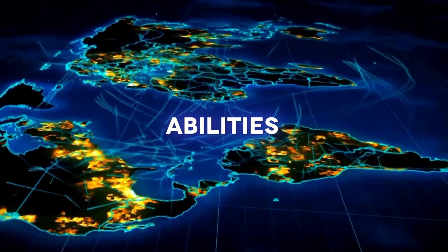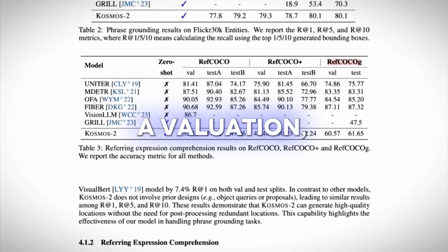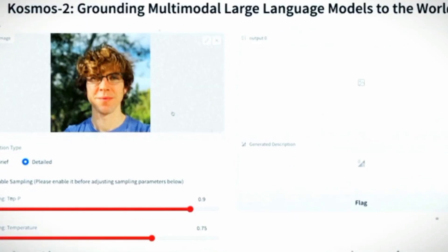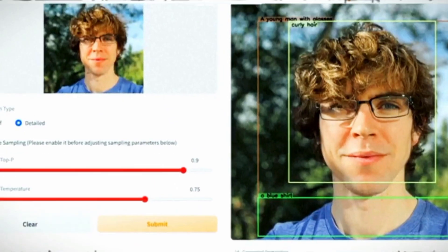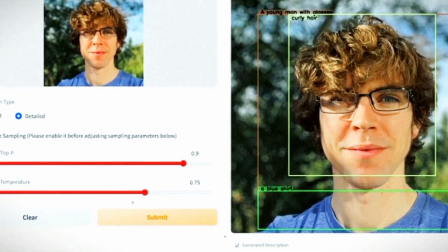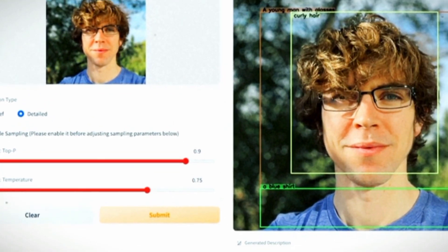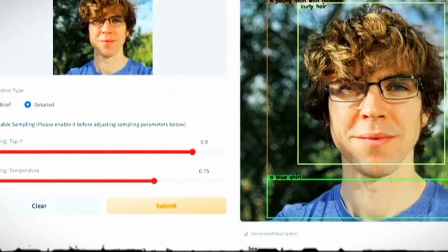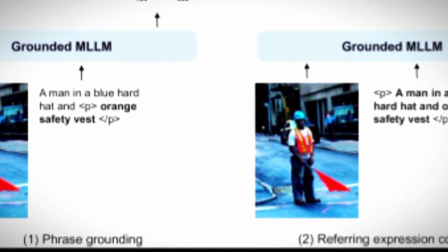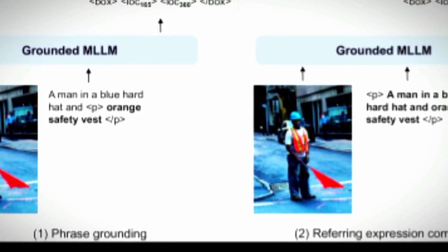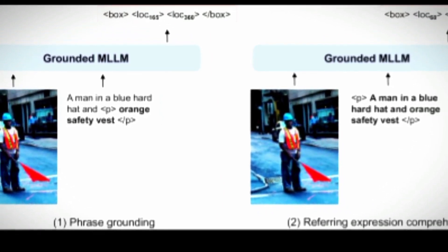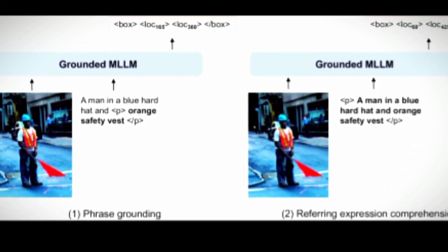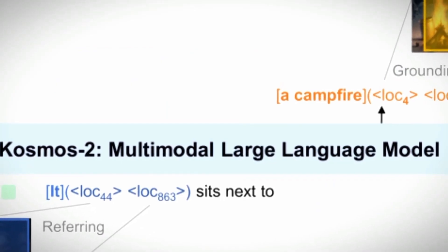The impressive multimodal grounding abilities of Cosmos 2 needed evaluation, so Microsoft conducted tests on popular tasks like phrase grounding and referring expression comprehension. In the phrase grounding task, Cosmos 2 was given one or more phrases and had to predict the corresponding bounding boxes in an image. It aced it — Cosmos 2 generated high-quality locations without the need for any post-processing, showcasing its effectiveness. No redundant locations, just pure accuracy.